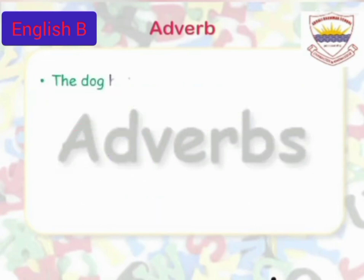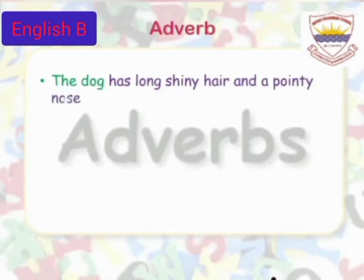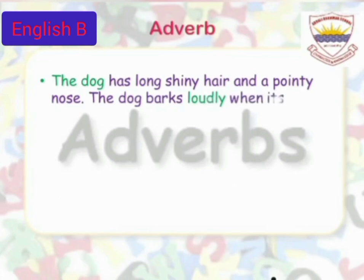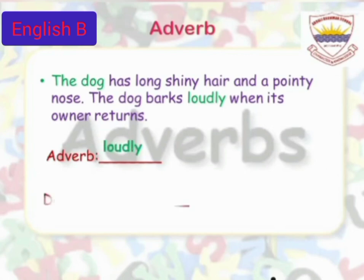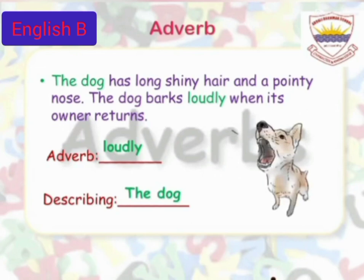The dog has long shining hair and a pointy nose. The dog barks loudly when its owner returns. In this paragraph, the adverb is loudly, which describes the verb barks. Look at the picture — the dog is barking.